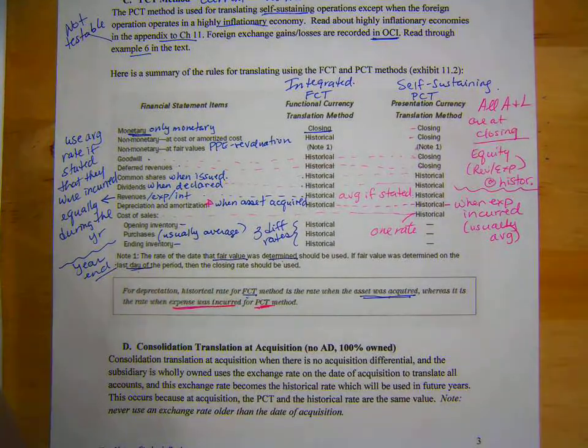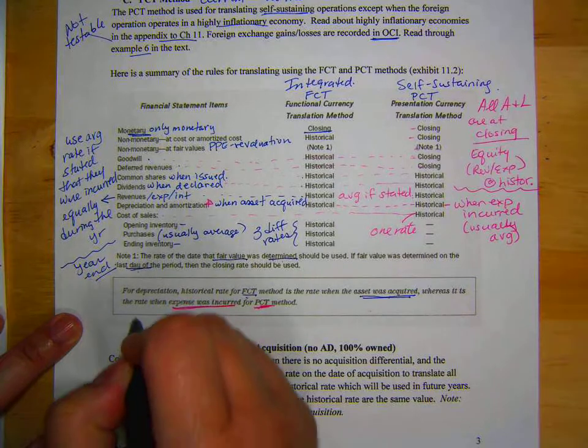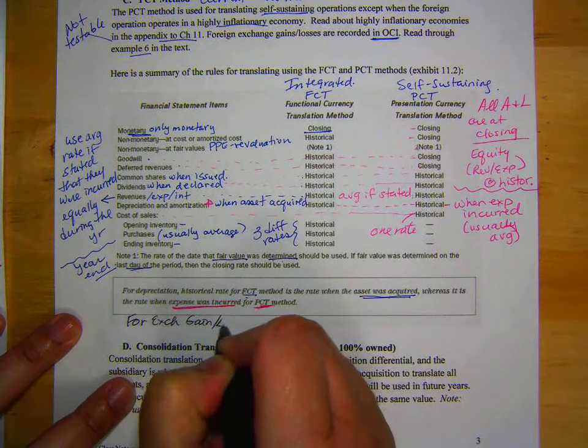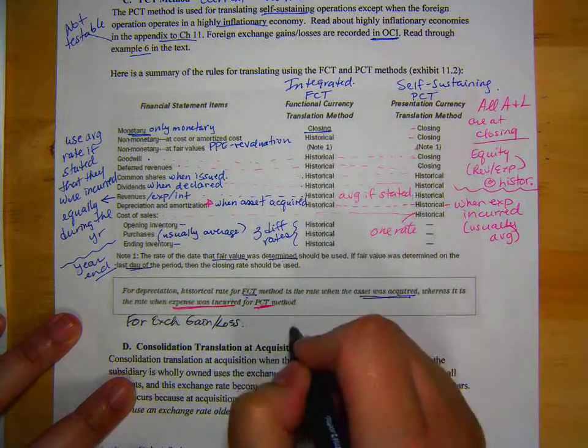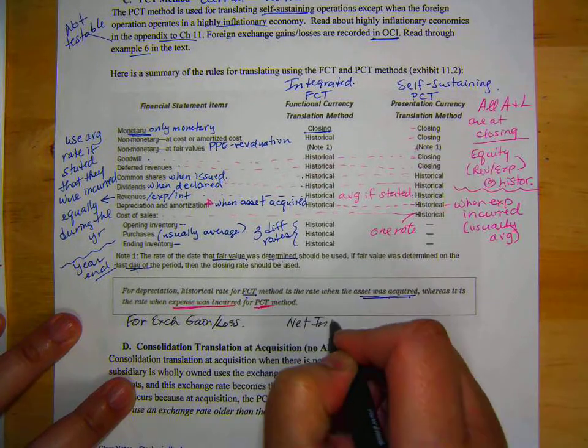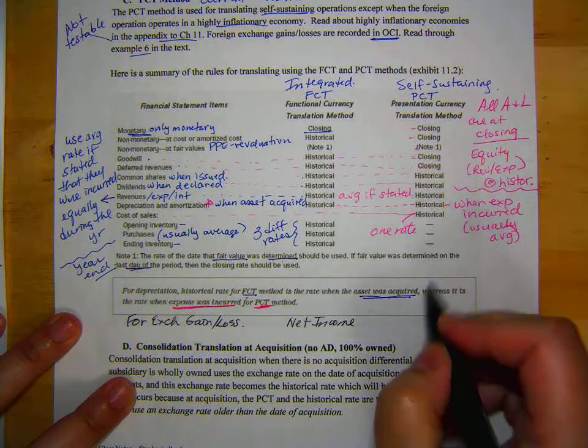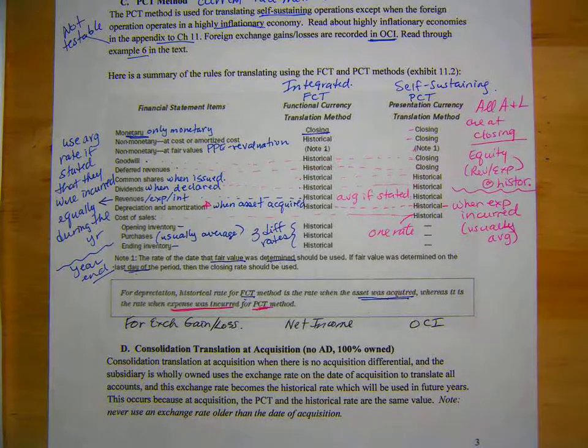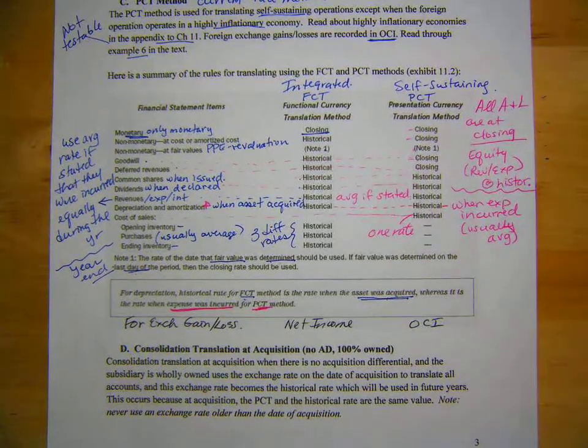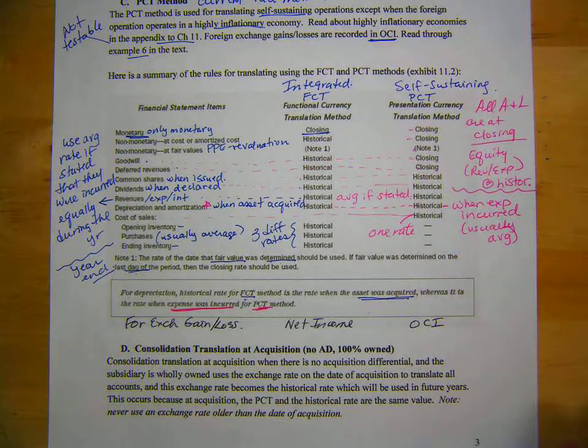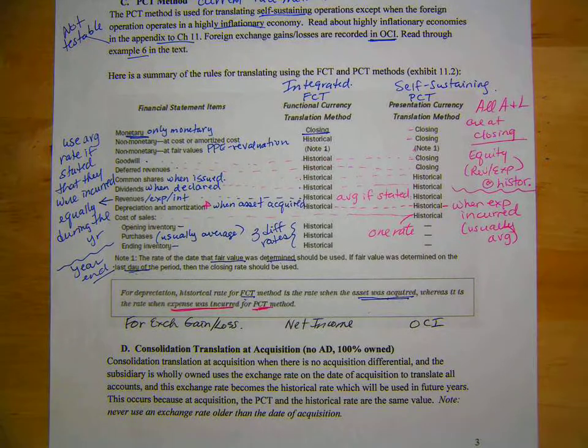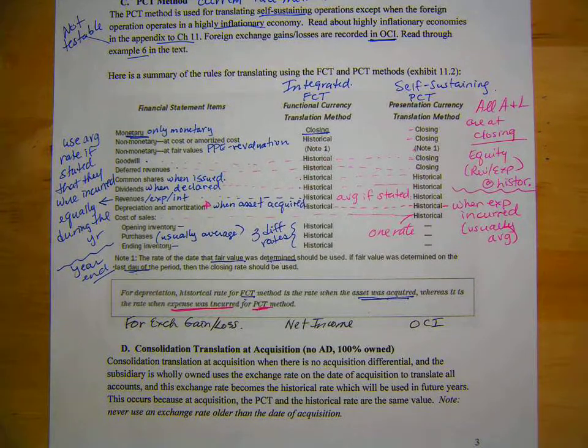Now, I do want to add one little thing down. I want to add foreign exchange gain or loss. Under integrated, or FCT, it goes to net income. And under PCT, it goes into OCI. So, use this rulebook when we're going through problems. Okay, and on the next video, we will start part D and go through some examples.